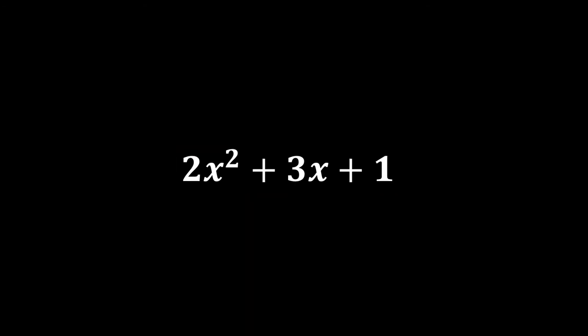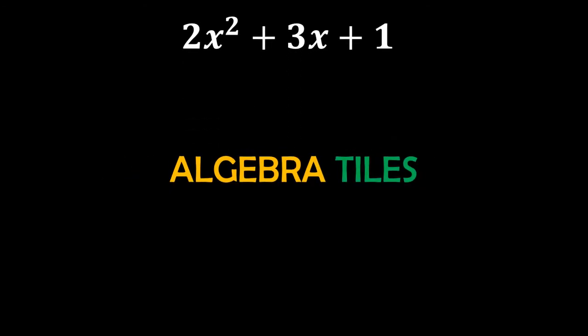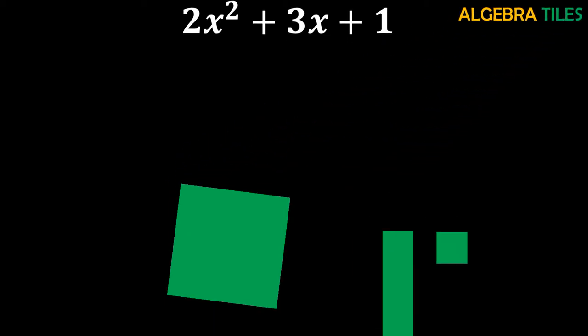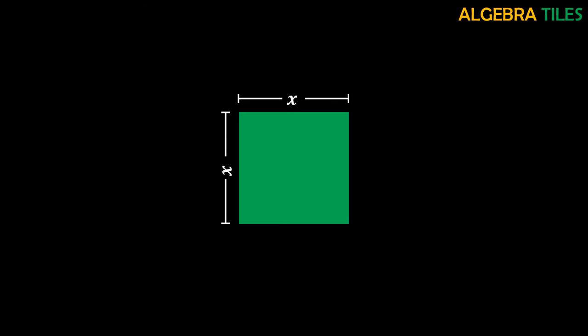For visualizing algebraic expressions you use algebra tiles, which are something like this. Algebra tiles are very useful for better understanding of algebraic concepts. Starting with the very first algebra tile: a square tile. This is a square tile where all sides equal x. When you multiply x times x to find its area, you get x squared. So this is known as the x squared tile — whenever you have an x squared term in your expression, you use this tile.